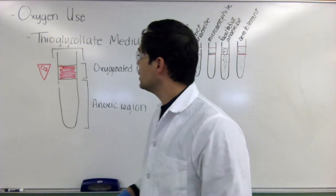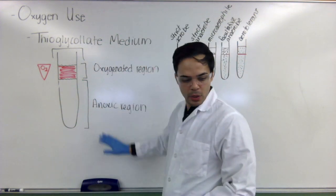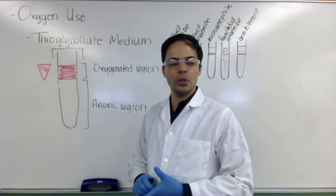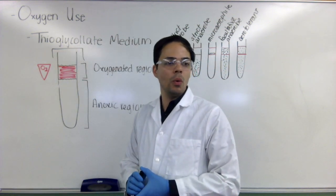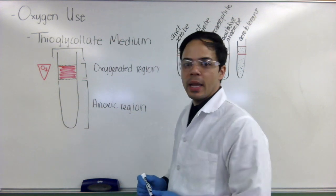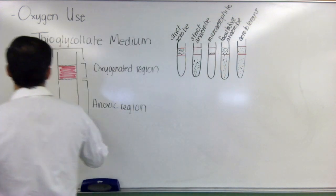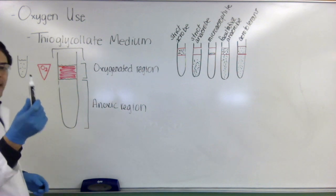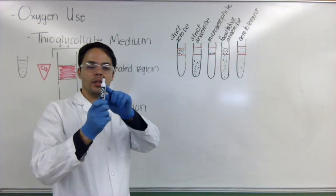Now how do we inoculate the thioglycolate medium? So what you want to do is you can start from a broth culture, you can start from a slant or you can start from a colony. Let's say we're starting from a broth culture. So what you would want to do is resuspend any pellet that might have been in your tube there and let's pretend that this is our inoculation loop.